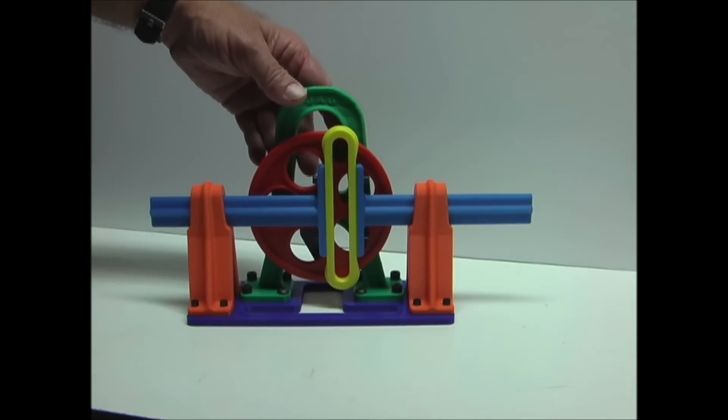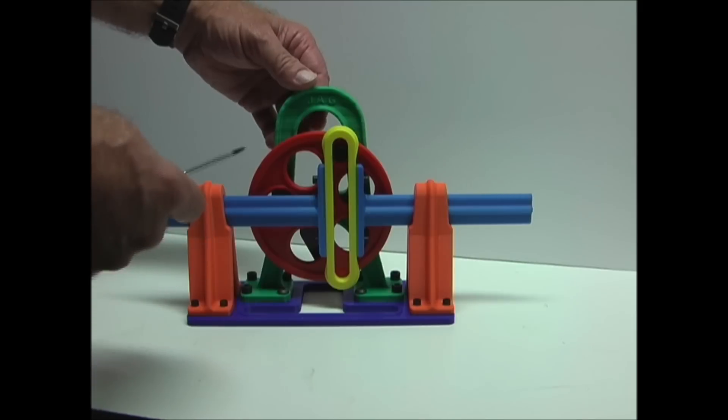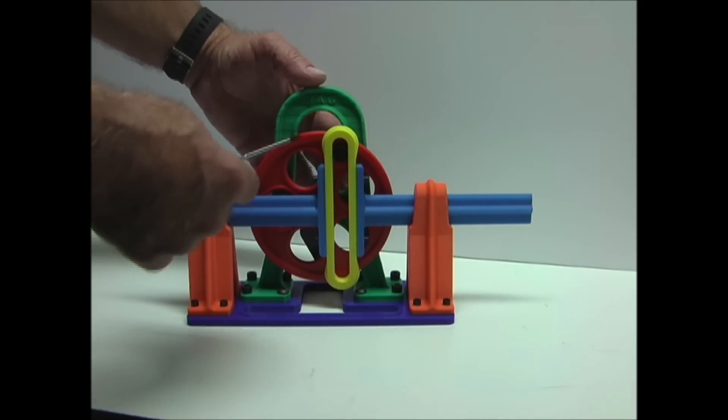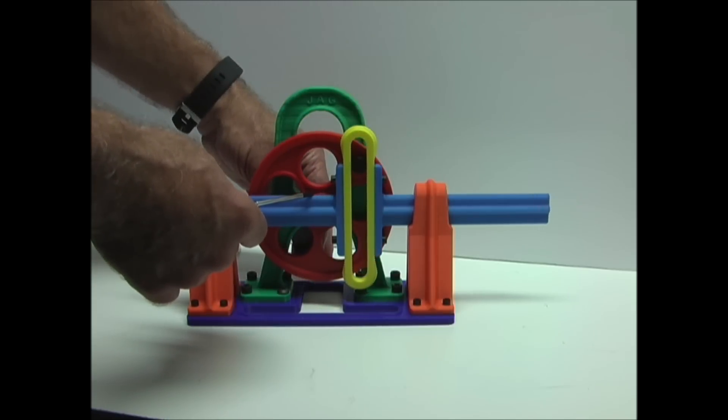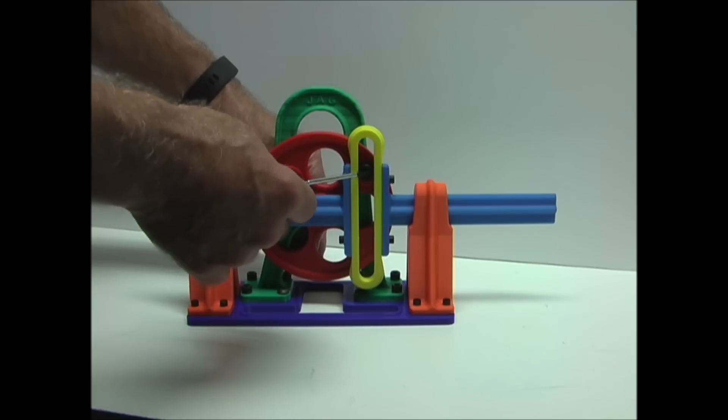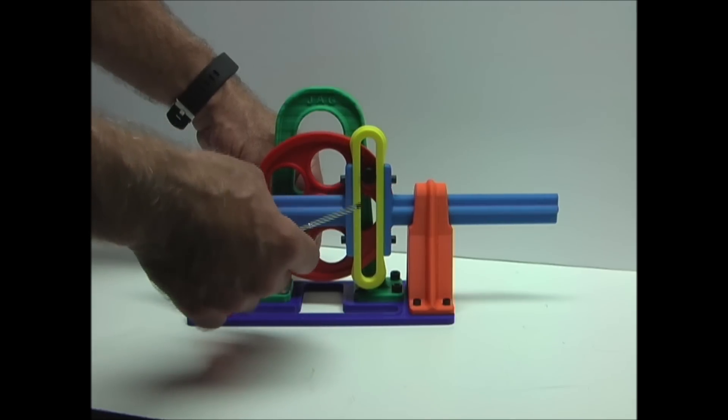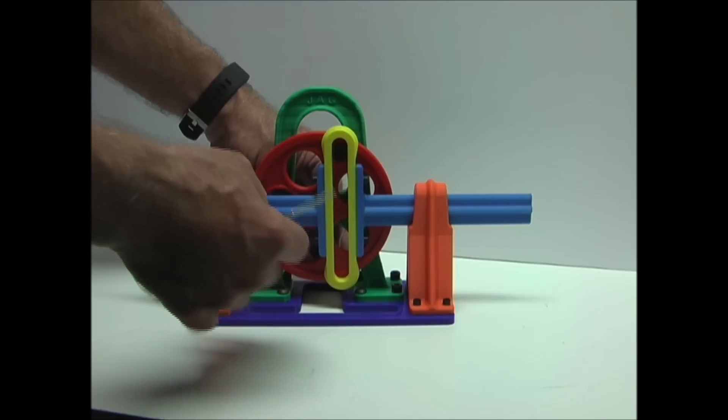This first one is called a scotch yoke mechanism, and it's also known as a slotted link mechanism, and it converts rotary motion to linear motion. There's this main wheel that rotates about its center axis. There's a pin in the wheel offset from the center that moves in this slotted link or slider, and these arms on either side are connected to the slider.